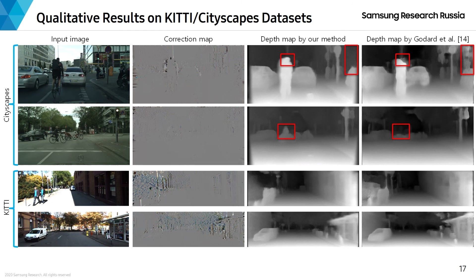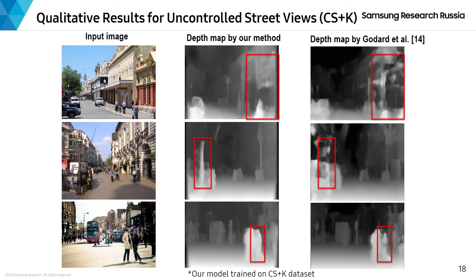Now, some qualitative comparison of our model with the baseline model. We can see that the depth maps output by our model are more correct than those of the baseline model. Also, we can see that the correction maps are non-zero in various problematic areas, which supports our intuition when introducing correction maps. Another interesting comparison is done for uncontrolled street views completely unrelated to the training datasets, where we also see that our model outputs much better depth maps.